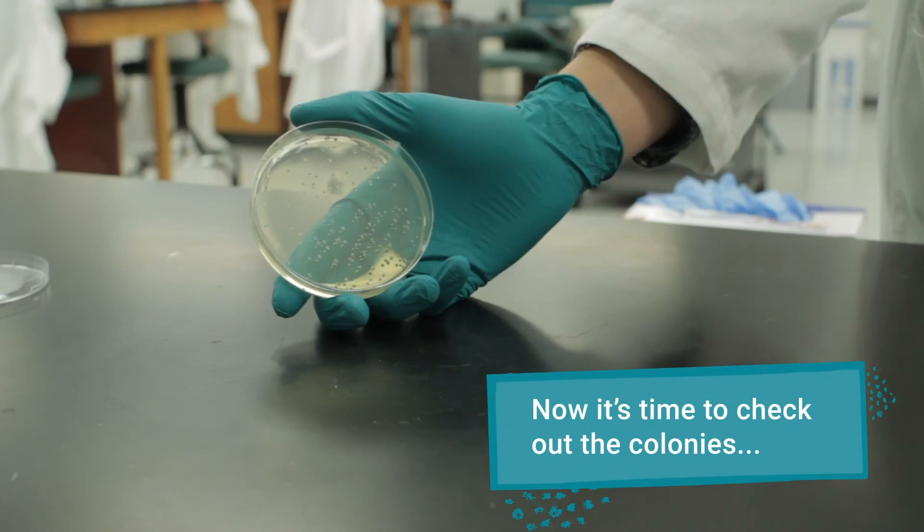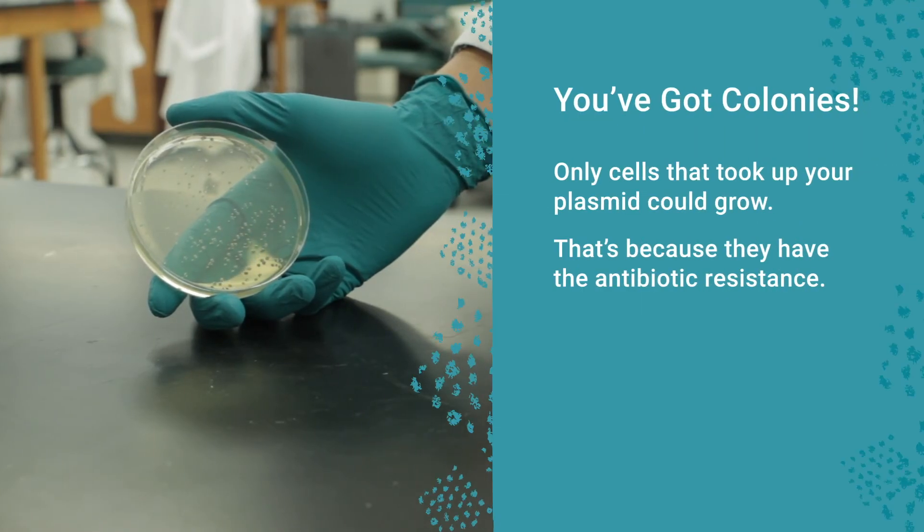Now, it's time to check out your colonies. Since the plates were treated with an antibiotic, the colonies most likely are made up of cells that took up your plasmid containing the resistance gene, otherwise they wouldn't have grown.